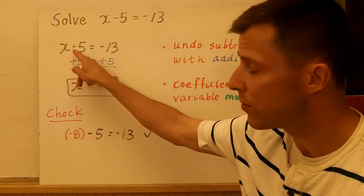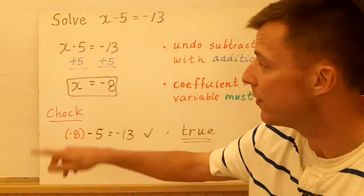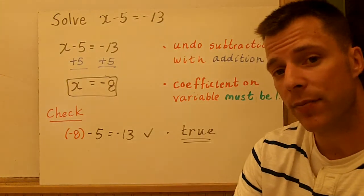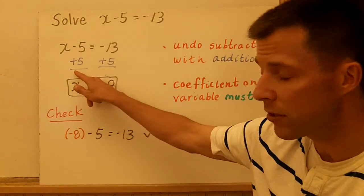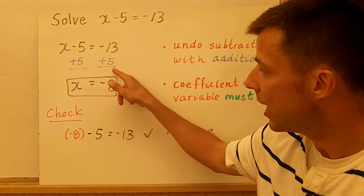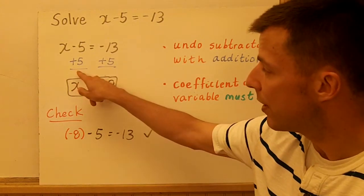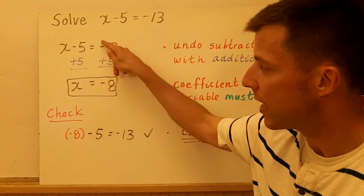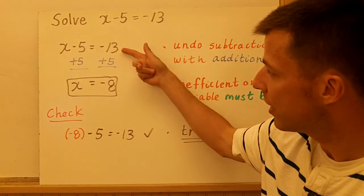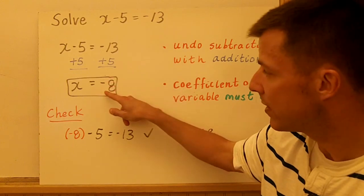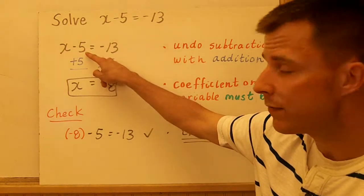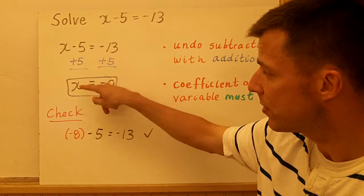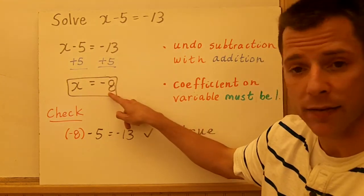So instead of subtracting 5 or taking away 5, we're going to add 5 to both sides. Now, these are equations, so you have to keep the equation balanced. If you do something to one side of the equation, you have to do it to the other. So if we add 5 to the left side of the equation, we have to add 5 to the right side. So negative 13 plus 5 is negative 8. And notice how negative 5 and positive 5 cancel. They're additive inverses. So you're left with x equals negative 8.